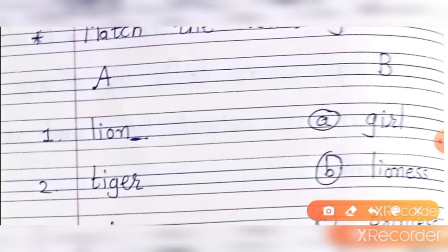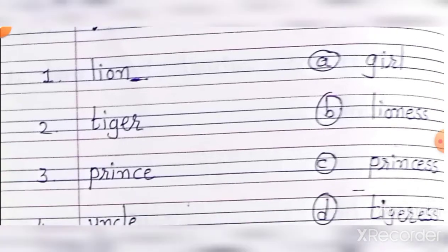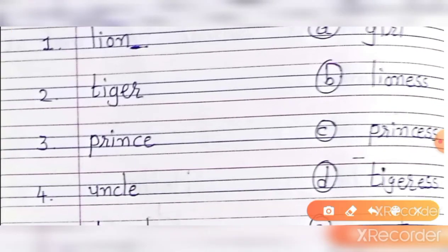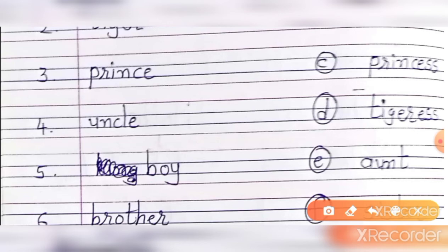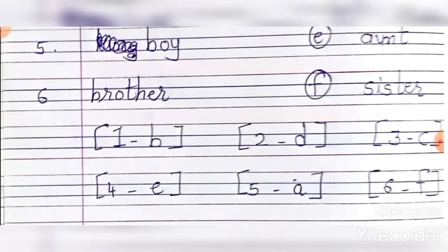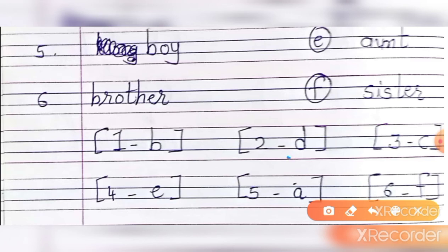Woh match the following hai — male aur female, woh aapko match karna hai. First: lion — toh uska aayega lioness. Tiger — toh tigeress. Prince — toh princess. Prince matlab rajkumar, princess matlab rajkumari. Uncle — toh aunt. Boy — toh girl. Brother — toh sister. Niche uske aapko answer likhe hue hain — first number ka answer hai b: lioness. Second number ka answer hai d: tigeress. Third number ka answer hai c: princess. Fourth number ka answer hai e: aunt. Fifth number ka answer hai a: girl. Aur last sixth number ka answer hai f: sister.